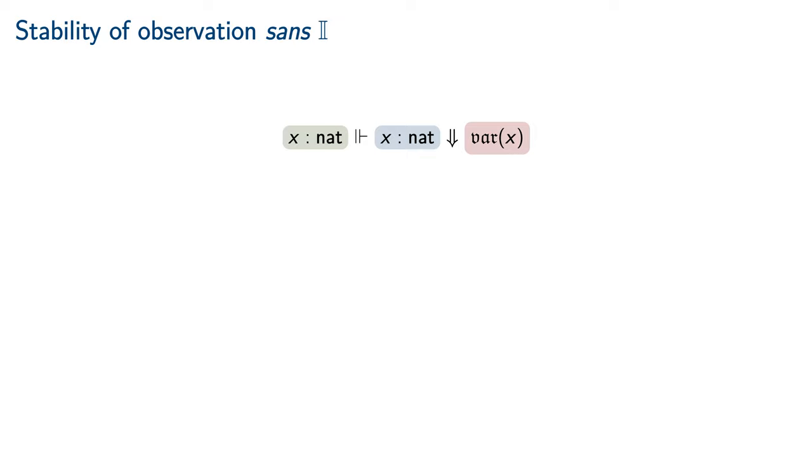In addition to the question of what contexts observations are made in, we must also consider under what context substitutions those observations are stable.